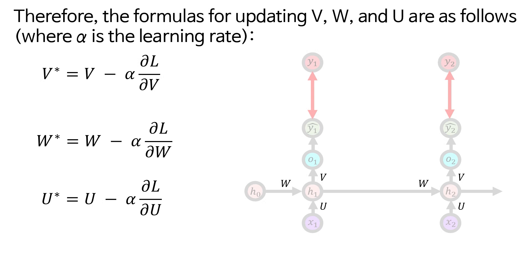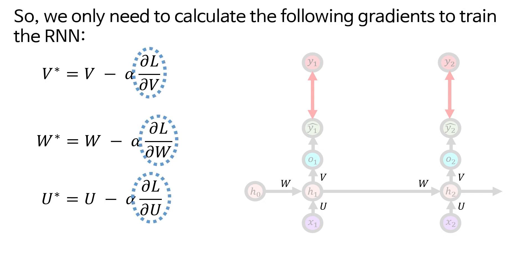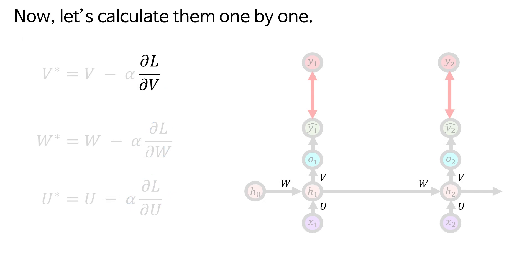O represents the process of calculating softmax and is not an actual node in the network. Therefore, you only need to calculate these three sets of connection weights to update these three sets of connection weights, V, W, and U. Weight updates in an RNN, like other neural network models, are performed using gradient descent and backpropagation. Therefore, the formulas for updating V, W, and U are as follows, where alpha is the learning rate. So, we only need to calculate the following gradients to train the RNN. Now, let's calculate them one by one.